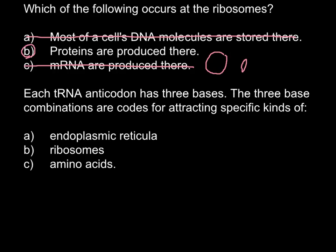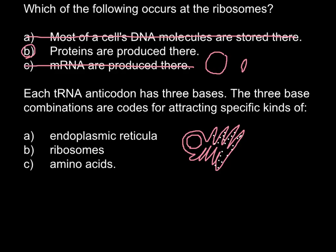Answer A: endoplasmic reticulum. Imagine that this is the nucleus, and it is surrounded by endoplasmic reticulum, which can be of two kinds — smooth and rough. But no matter smooth or rough, there are ribosomes there that serve for the production of proteins. So this is an incorrect answer and we can cross it out.